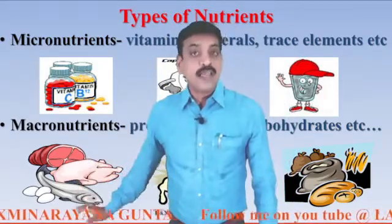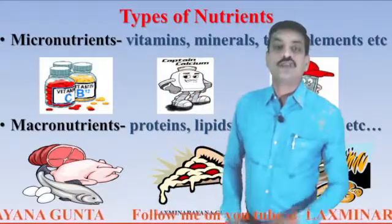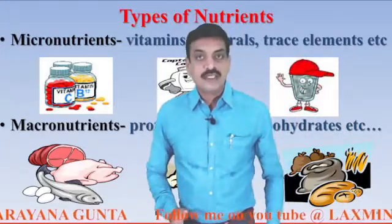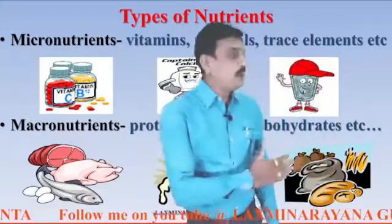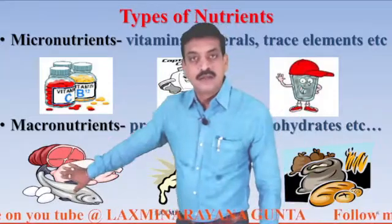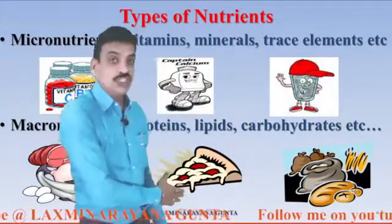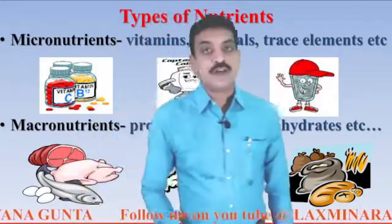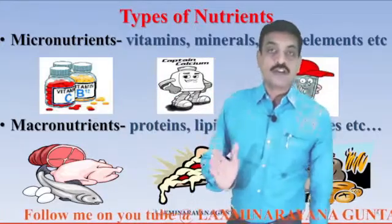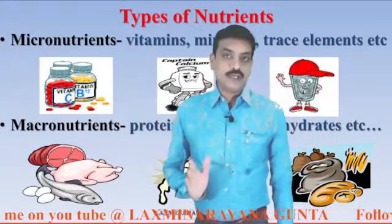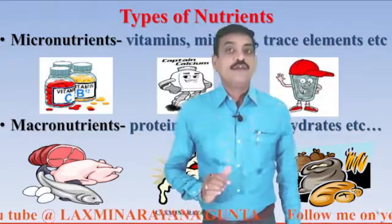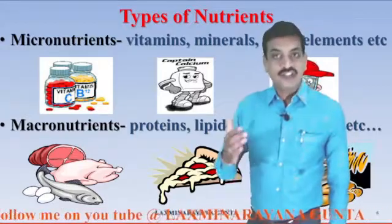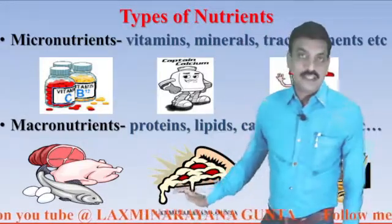Macronutrients are required by our body in large quantities. Proteins, lipids, and carbohydrates are called macronutrients. For example, rice is rich in carbohydrates; meat or eggs are rich in proteins; butter and cheese are rich in fats. All these are responsible for running and maintaining our body. So nutrients are broadly classified into two types: micronutrients, required in trace amounts, and macronutrients, required in larger quantities. Macro means large scale — they are required by our body in large scale.